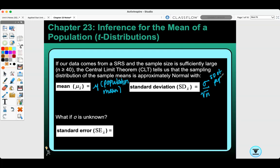If sigma is unknown, we can use our standard error, and that would be s over the square root of n, and that's our sample standard deviation.